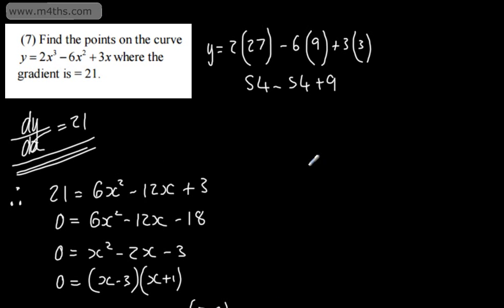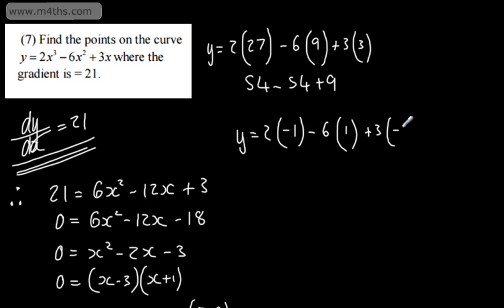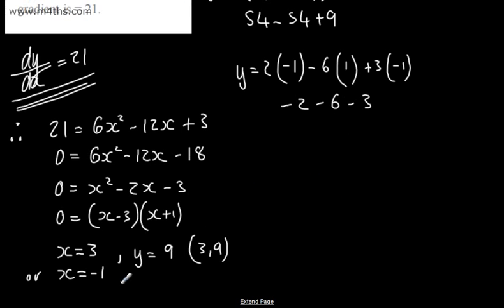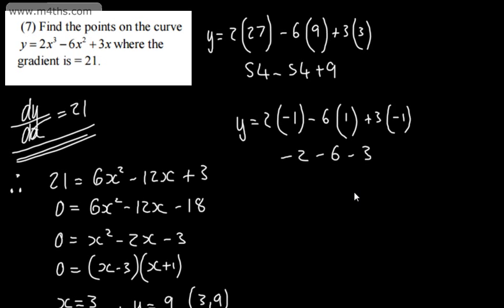And then substituting in negative 1: y is equal to 2 lots of negative 1 cubed, which is negative 1, minus 6 lots of negative 1 squared, which is 1, and then plus 3 lots of negative 1. So negative 2, minus 6, minus 3 gives negative 11. So y is equal to negative 11, giving the point negative 1, negative 11. That is where the gradient to that function is going to be 21.